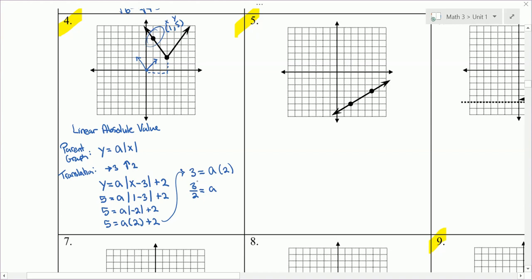Plug in the 3 over 2 for a. Our final answer is y equals 3 over 2 times the absolute value of x minus 3 plus 2. That is the equation of the graph that is drawn there.